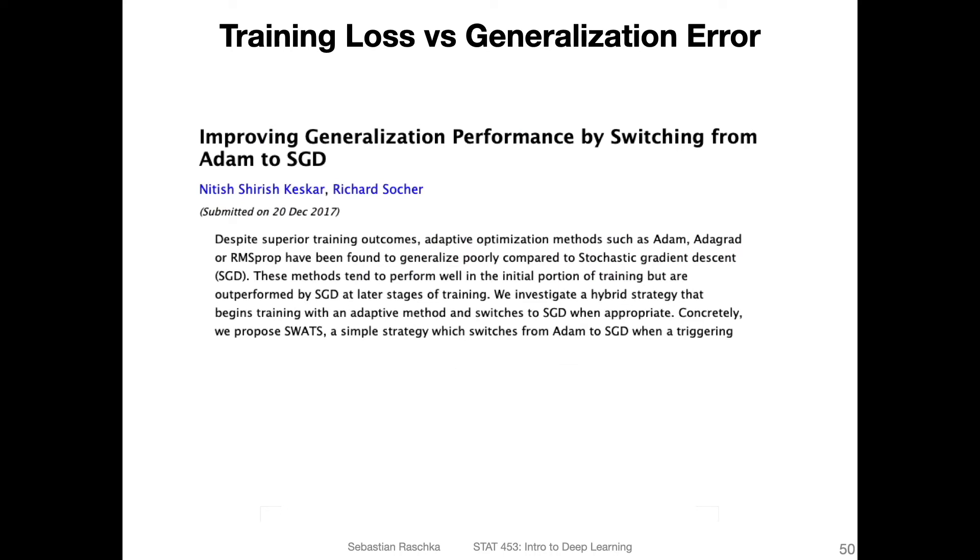There was also a fun paper where they suggest switching from Adam to SGD over the course of training. They say despite superior training outcomes, adaptive optimization methods such as Adam, Adagrad, or RMSprop have been found to generalize poorly compared to SGD. These methods tend to perform well in the initial portion of the training, but are outperformed by SGD in the later stages of training. We investigate a hybrid strategy that begins with training with an adaptive method and then switching to SGD when appropriate.